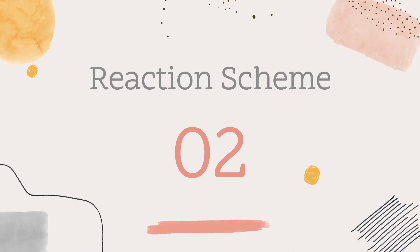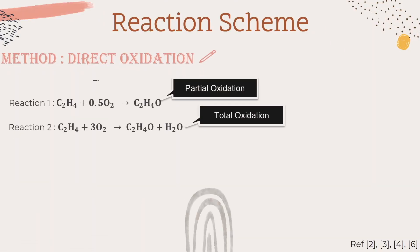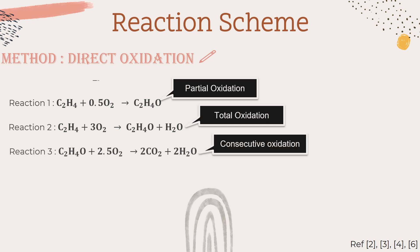Reaction Scheme: The method used is direct oxidation and has three reactions that can take place. The first and second reactions are favorable as they produce the desired product, ethylene oxide. However, the third reaction consumes ethylene oxide to produce waste carbon dioxide and water.